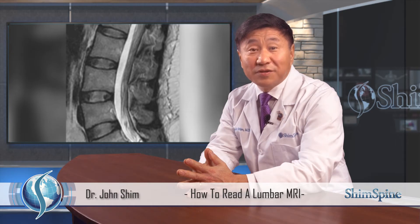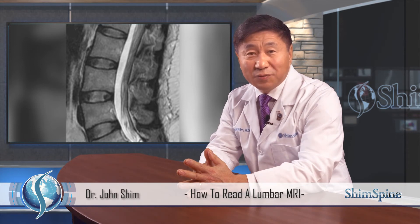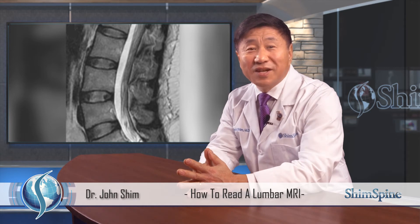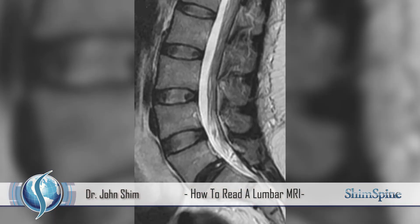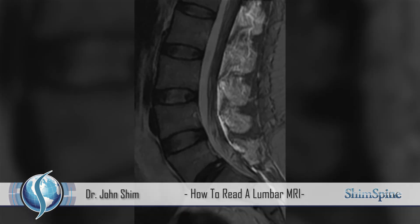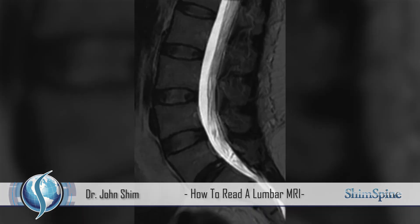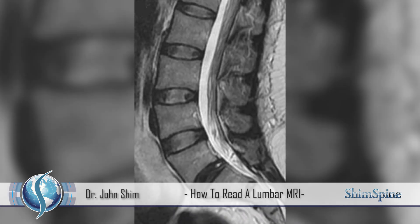The sagittal plane is also a cross-sectional view, but this is from the side of the body. The best way to look at the sagittal view is to look at the side view of the spine, and take thin slices from the side to the middle of the body. In the sagittal view, we can see the vertebral body in the front. We see the posterior spinous processes in the back. And in the center, we see the space, which is a tube of water called the spinal sac. And within the sac, we can see individual nerves that are exiting from the spinal cord.